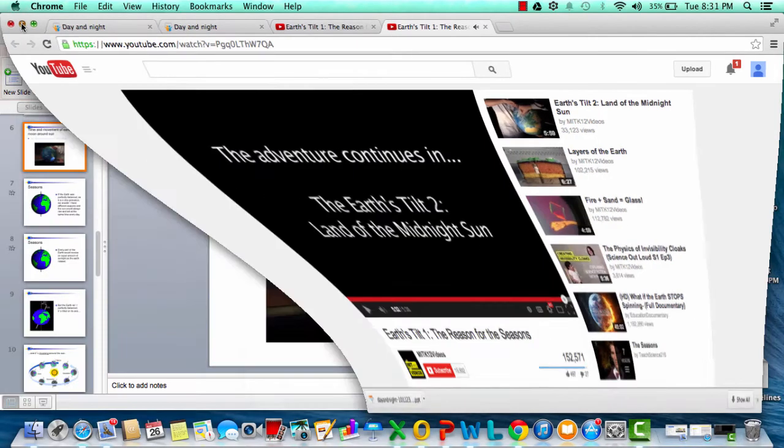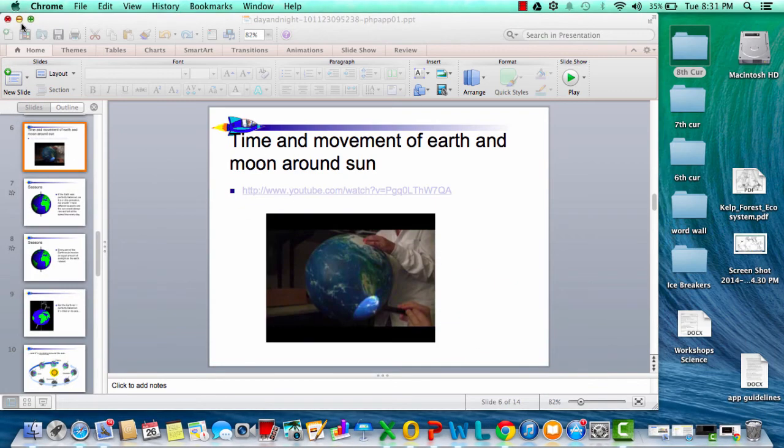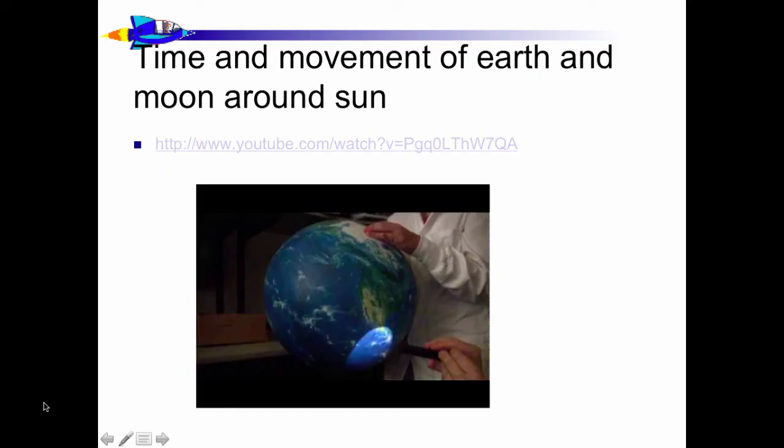Okay. So, that was a really good video that pretty much gave you everything you need to know about the reasons we have seasons. So, not only does it have to do with the revolution of the Earth around the sun, but it mainly has to do with the tilt. And, direct and indirect sunlight are involved.